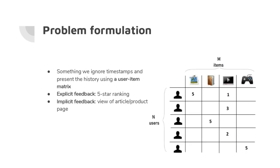Sometimes we ignore timestamps and present the full history as a user-item matrix, where each row is a user and each column is an item. With explicit feedback, you have a five-star rating — the first user might really like the postcards and give a one out of five to the TV.